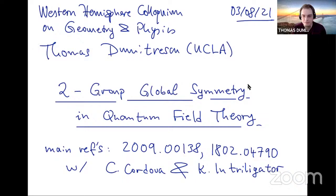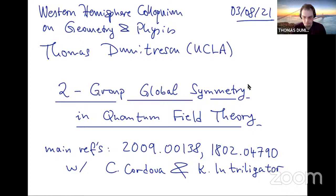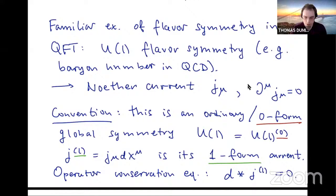Thanks, Andy, for the invitation and for the introduction. It's very nice to be here. I'll tell you about two-group global symmetry in quantum field theory in some particularly simple contexts. I thought that because this is a colloquium with a fairly broad audience, I will try to spend the first part of the talk giving a broad brush introduction to the subject, based mostly on this first paper here, which contains lots of elementary examples. And then if there's time, at the end, I will mention some more recent applications that came out in the form of this second paper. Both of these are in collaboration with Clay Cordova and Cannon Trelligator.